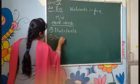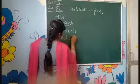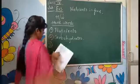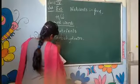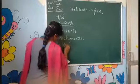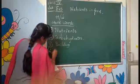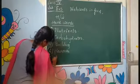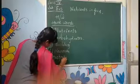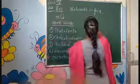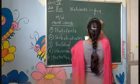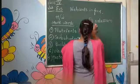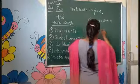Second one: carbohydrates. Third one. Fourth one: building. Fourth one: warmth. Fifth one: protective.